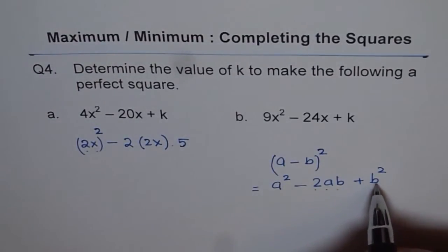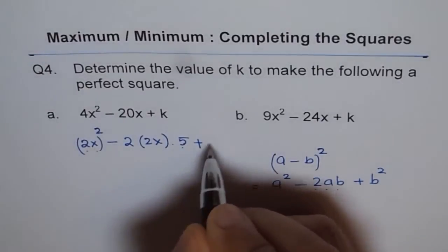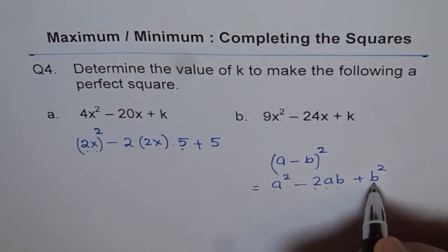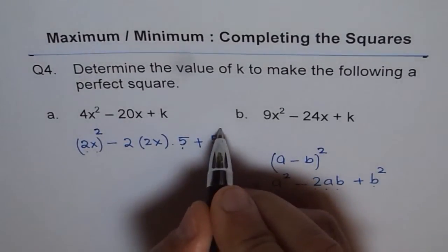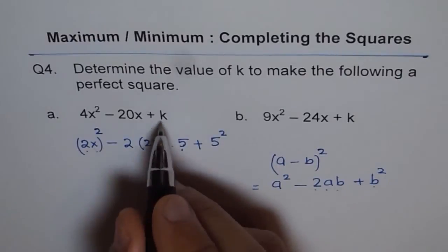Now what should k be? k should therefore be 5². This is B². So k should be 5². Therefore here k is 25.